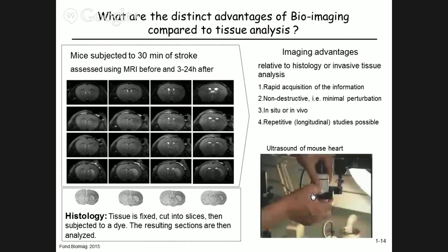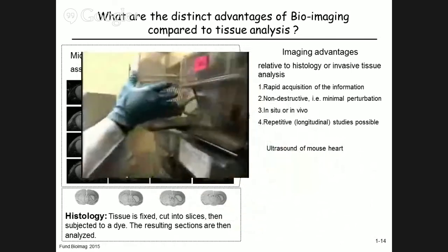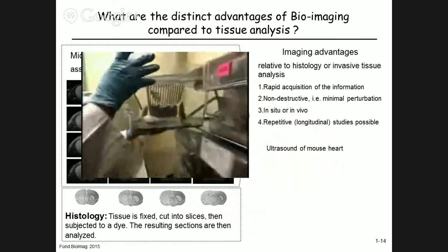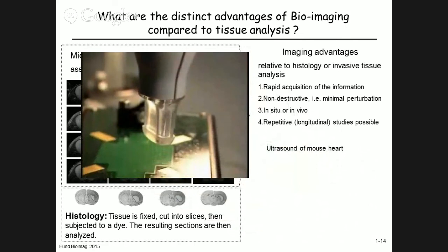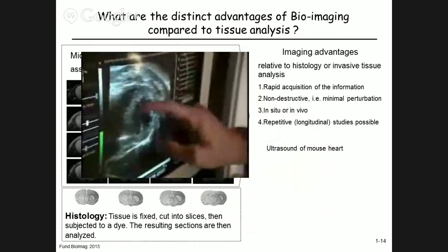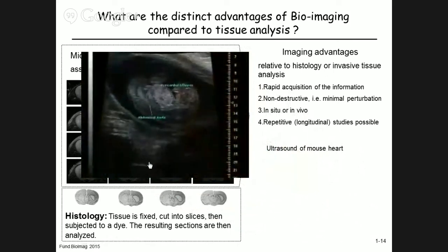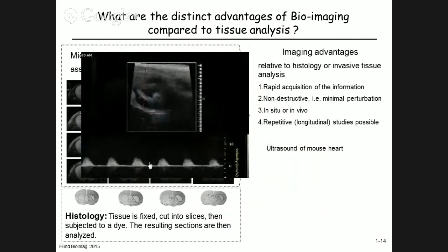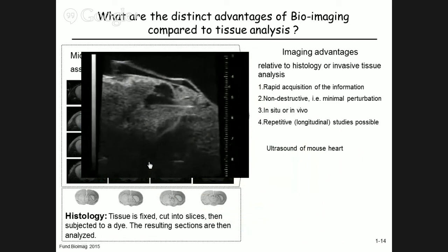Here's an example of ultrasound imaging of a beating mouse heart. Consider how small a mouse is, and therefore how small its heart is — this required a micro-ultrasound device, adapting standard ultrasound techniques used in dolphins and humans for the much smaller scale of a mouse. This is also something we'll explore in the course.